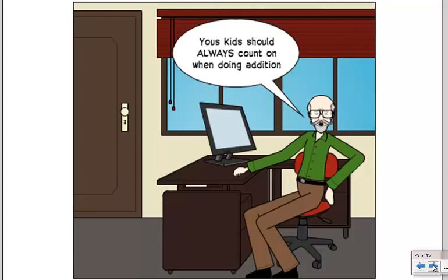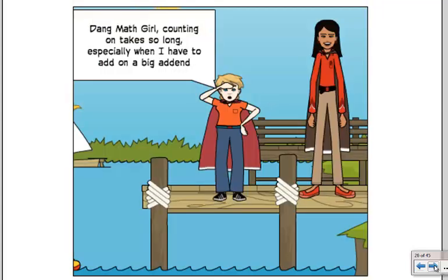Grumpy Math Guy says you kids should always count on when doing addition. So counting on is a strategy we know works. But Math Boy says, dang Math Girl, counting on takes so long, especially when I have to add on to a big addend, like 16 plus 19.